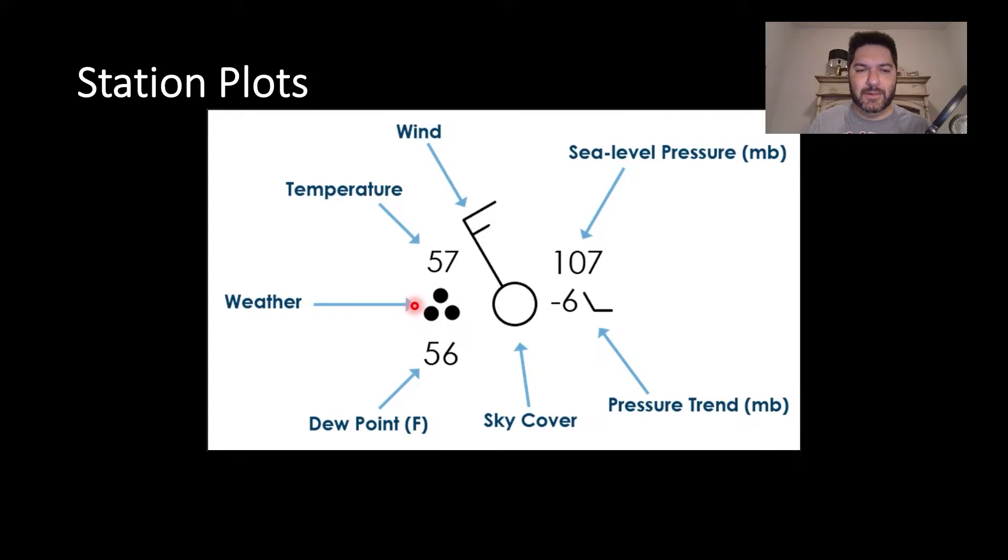Then you have this weather symbol here below the temperature. That's three dots. I believe that represents moderate, maybe even heavy rain. Honestly, I've forgotten most of these weather symbols. But if you're curious about that, look it up on Google. You can find all the information there.